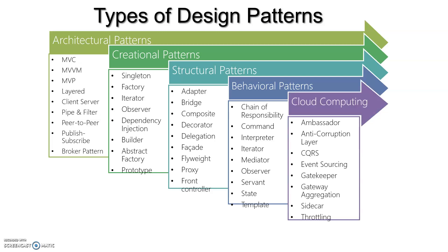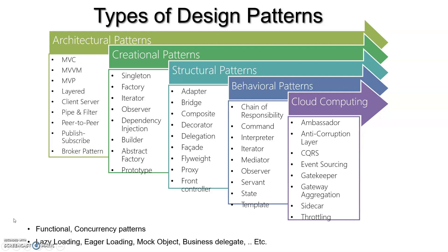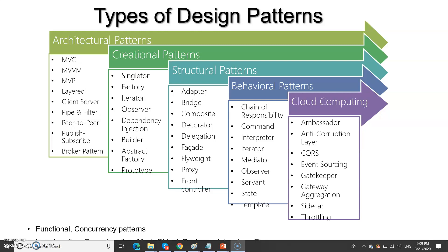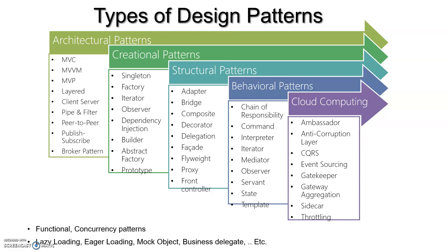Even cloud computing has its own patterns — there are plenty of them. A few examples are Ambassador, Anti-Corruption Layer, Event Sourcing, and Gatekeeper. These are used for various purposes such as data management and server maintenance. Apart from these, there are also functional and concurrency type patterns — there's a big list, so if you have such requirements please look through those.